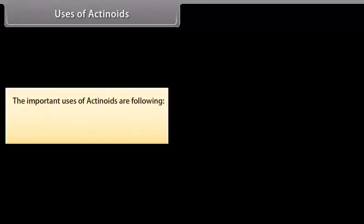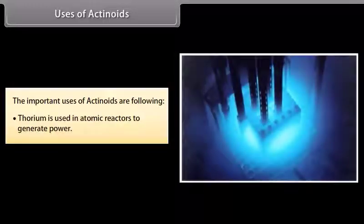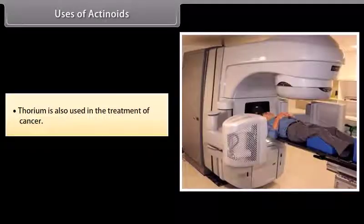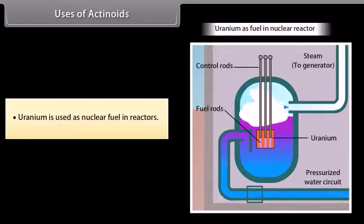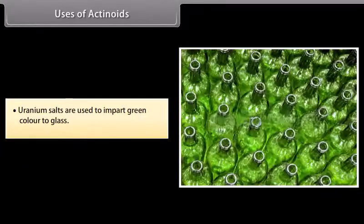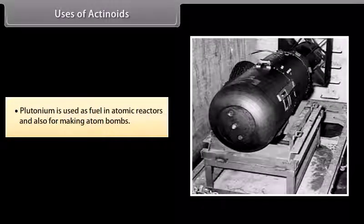The important uses of actinoids are as follows: thorium is used in atomic reactors to generate power and also in the treatment of cancer. Uranium is used as nuclear fuel in reactors, and uranium salts are used to impart green color to glass. Plutonium is used as fuel in atomic reactors and also for making atom bombs.